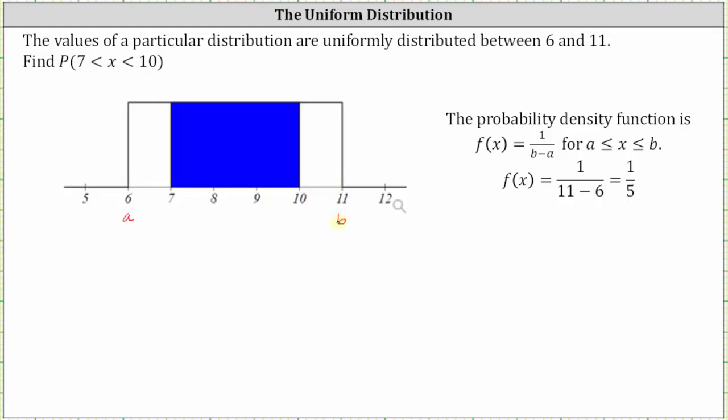The entire distribution rectangle has an area of one. Since we have a probability distribution, we know the sum of the probabilities must equal one or 100%.